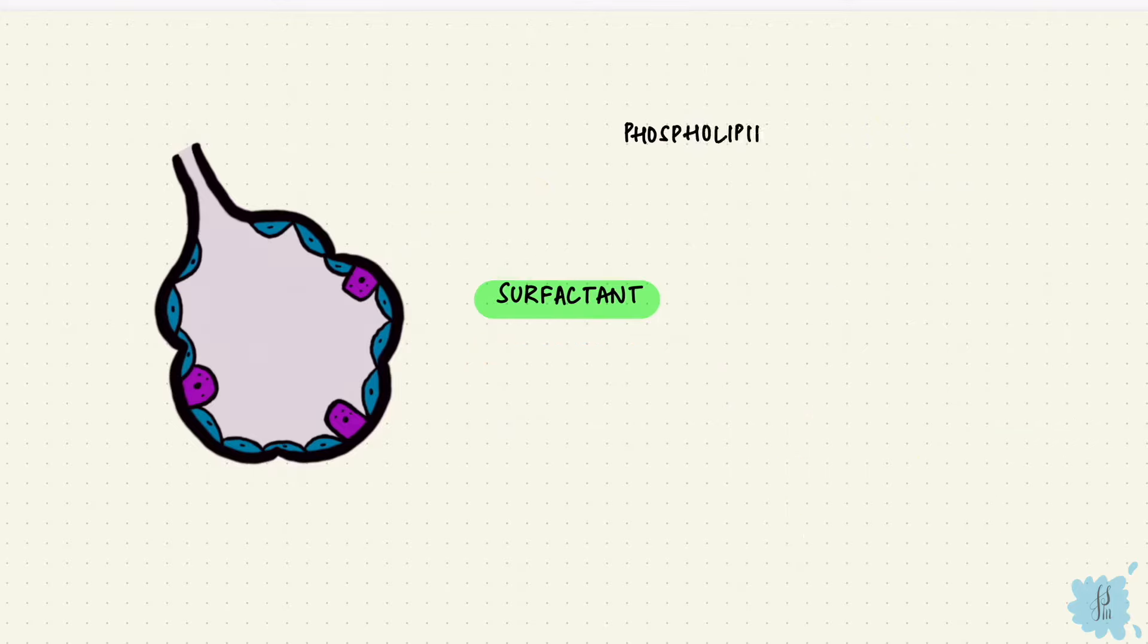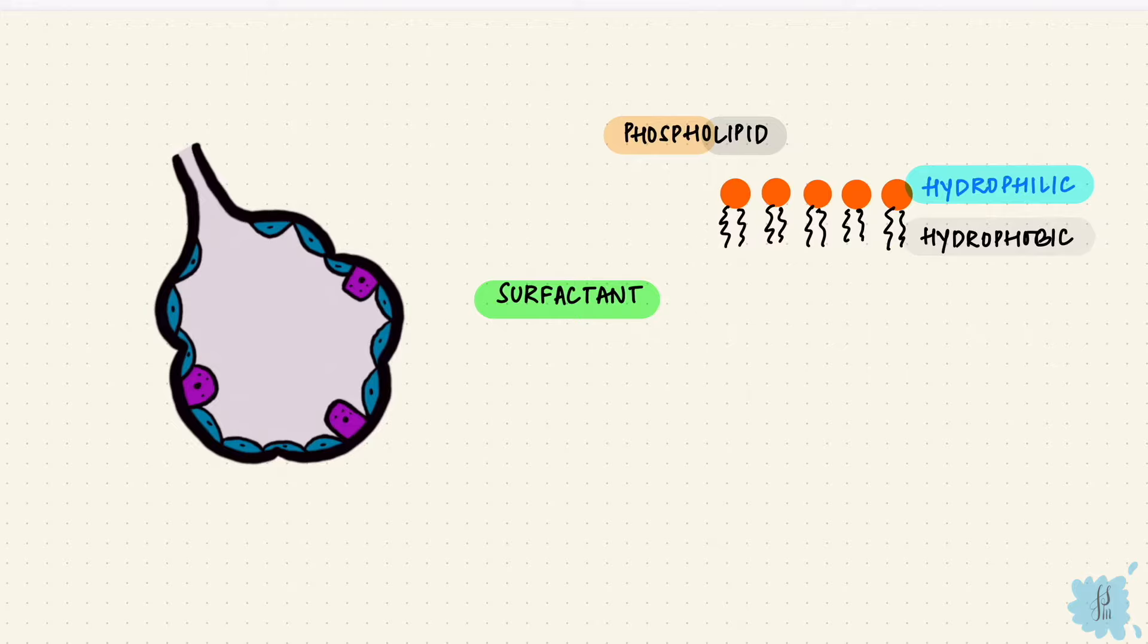Now it's a phospholipid, which means it has a phosphate component and a lipid component, and it's amphipathic, so hydrophobic and hydrophilic portions. Hydrophobic means it doesn't like water, and hydrophilic means it does. The tails are the hydrophobic portion.